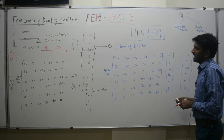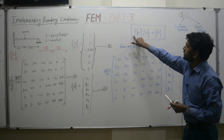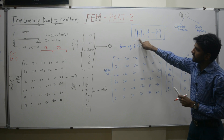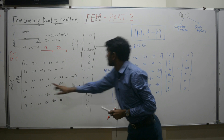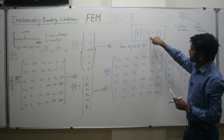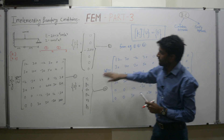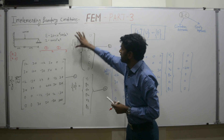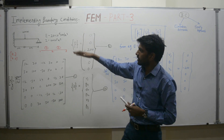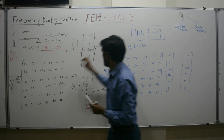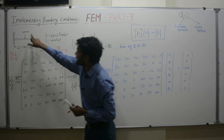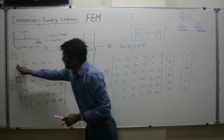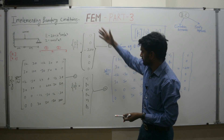The general finite element equation is K·U = F. In the K matrix (global stiffness matrix), we include geometric and material data. In the U column vector, we input information related to the boundary conditions. In the force vector F, we include the external forces applied to the system. Here, at the center node (node 2), we have applied a 200 kilonewton force in the downward direction.